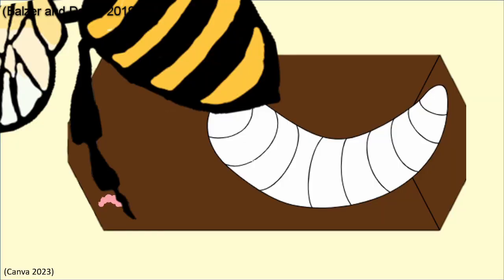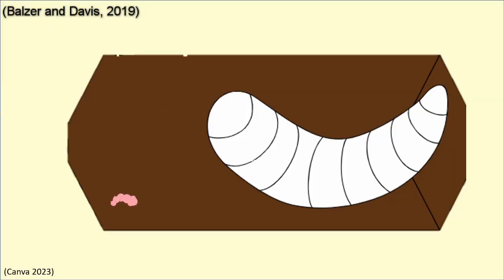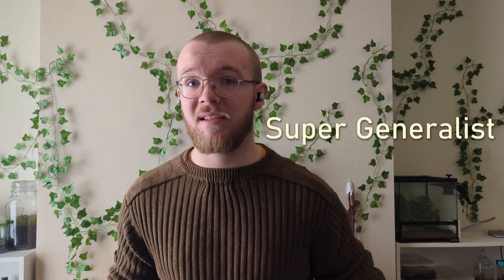The first instar Stylops larvae then burrow inside of the bee's larvae within the brood cell in order to utilize their underdeveloped immune system to establish themselves within the bee's abdomen undetected. This strategy is one of the main reasons why this parasite is able to become a super generalist.